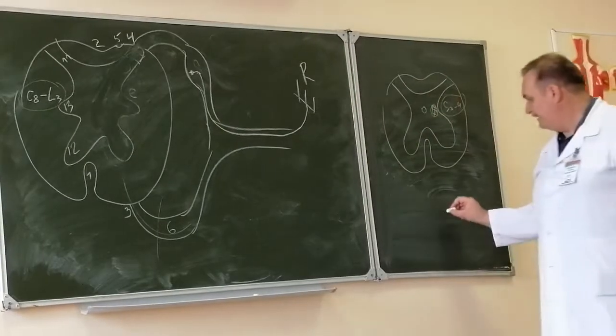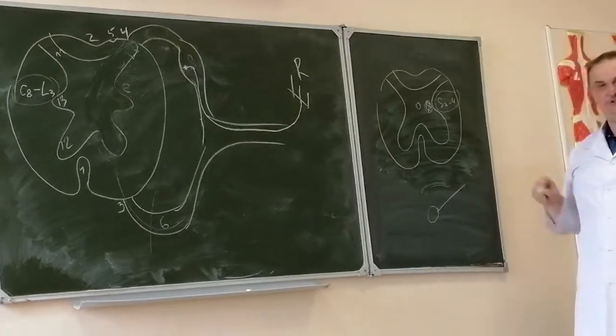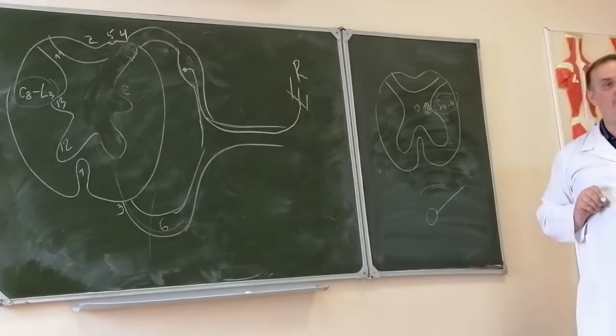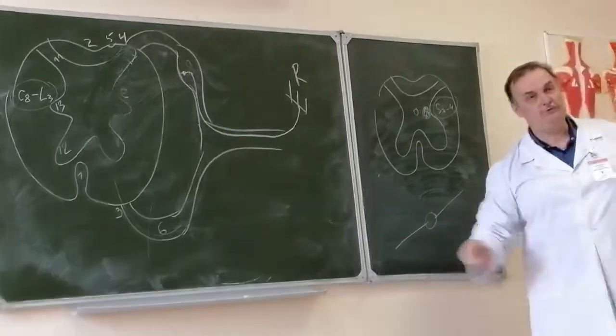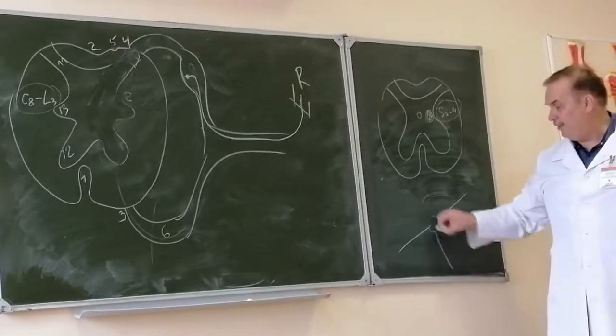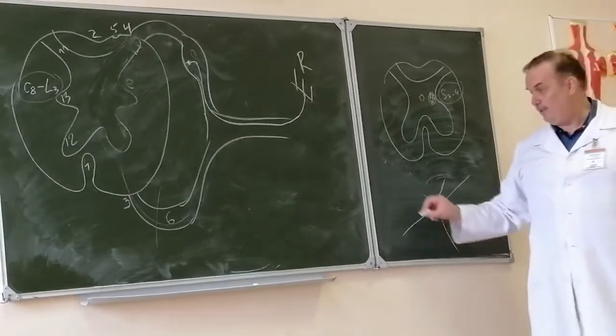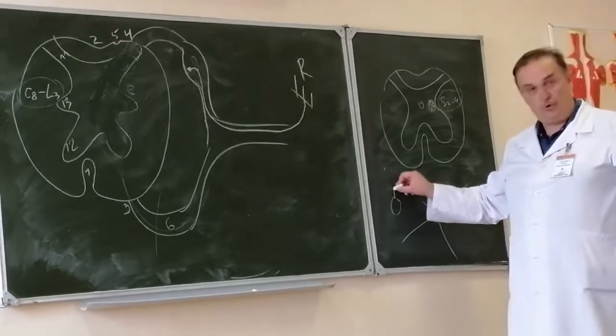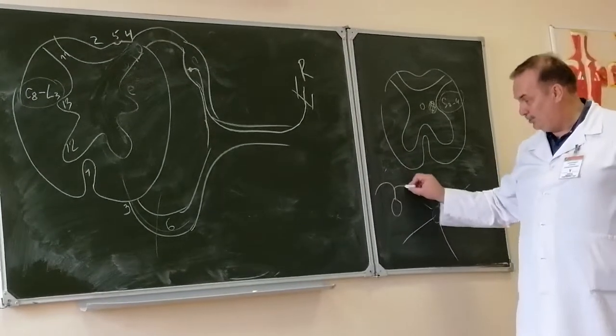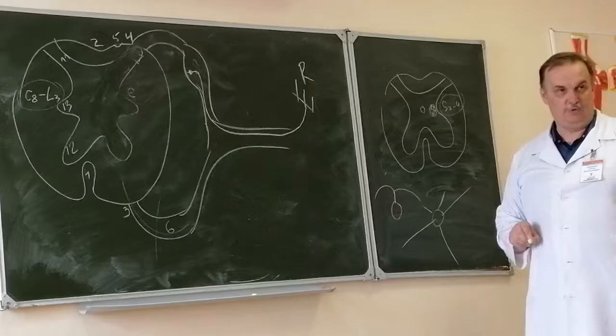I want you to know that if a neuron has one process we speak about unipolar, if two processes, bipolar, if a lot of processes, multipolar, and if we have one process which divides into two, pseudounipolar.